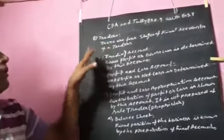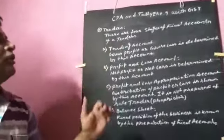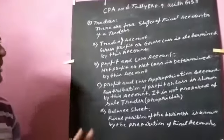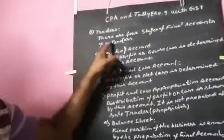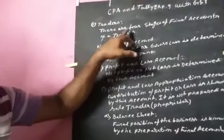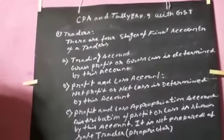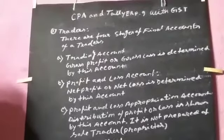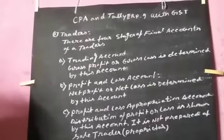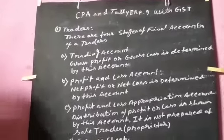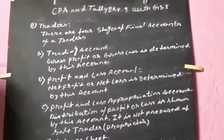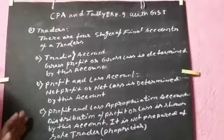We will show that there are four stages of final accounts of a trader. So, final account, this trader company will show final accounts to the client. And the bank will maintain the amount of registration. Number 1, trading accounts.